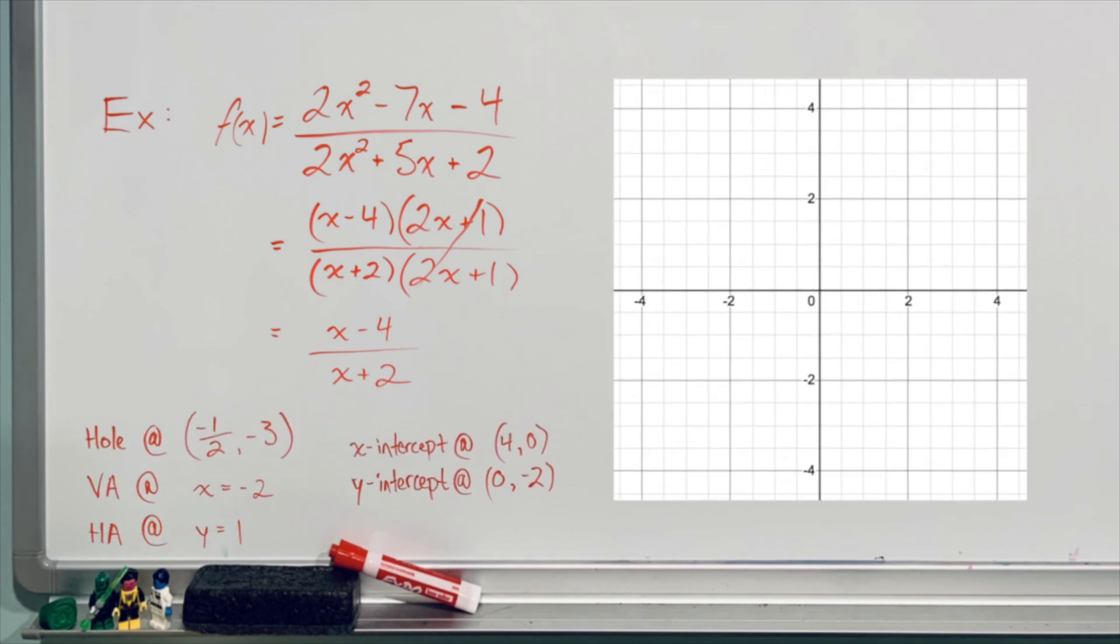So next I'm going to bring in a grid, and what I want to do is just take all this key information and just throw it up on this graph. I'll start with the hole because that's what I did first. Remember when we draw holes, we draw a circle that's not filled in, so I'm going to place that at negative half, negative 3. Remember that we indicate vertical asymptotes with a vertical dotted line, and that's passing through x equals negative 2. The horizontal asymptote is a horizontal dotted line, and that passes through y equals 1. And lastly, throwing up our x and our y-intercept onto our graph leaves us with all of the information we gained from our analysis put on our sketch so far.